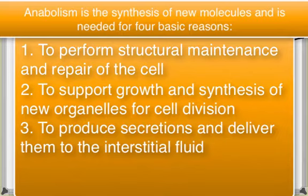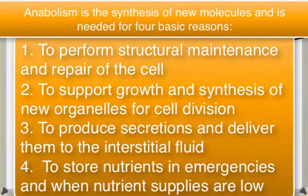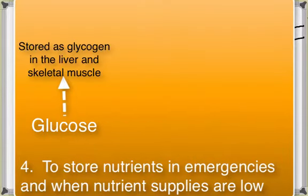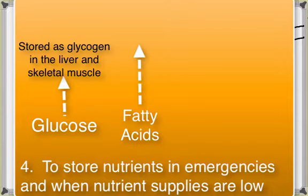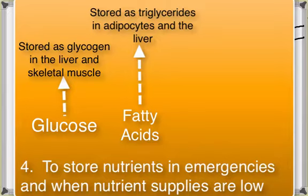Number three: to produce secretions — secretory cells synthesize their secretions and deliver them to the interstitial fluid. Number four: to store nutrient reserves — most cells store nutrients that can be used in periods of emergency or when the supply of nutrients in the bloodstream is inadequate. Glucose can be stored as glycogen, a branched chain of glucose molecules. Fatty acids are stored as triglycerides in adipocytes and liver cells, and these lipids are the most abundant storage of energy reserves. Proteins are the most abundant organic components of the body and perform a variety of vital functions for the cell.